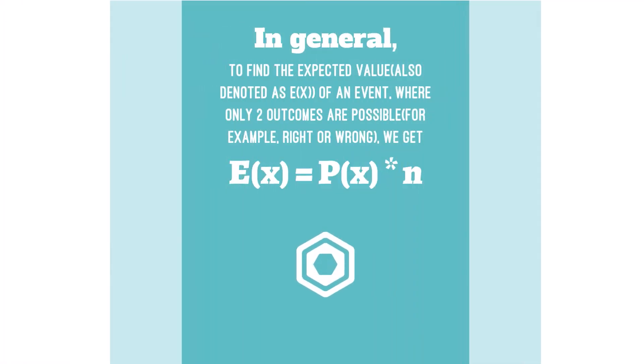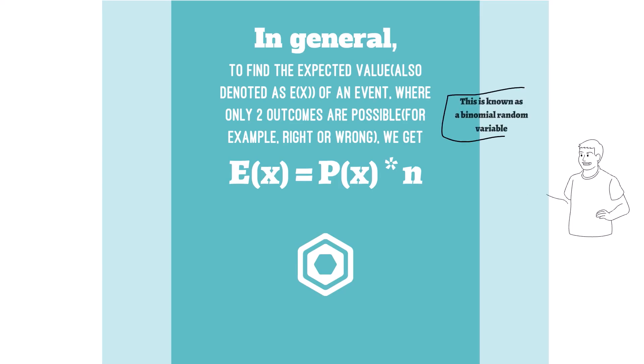In general, to find the expected value, also denoted as E(X), of an event where only two outcomes are possible, for example right or wrong, we get that E(X) is equal to the probability of X occurring in any given trial times the number of trials that occur, which is represented by n. This is also known as a binomial random variable.